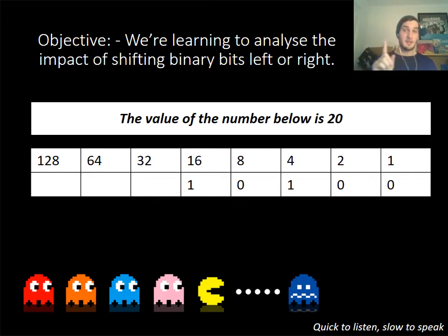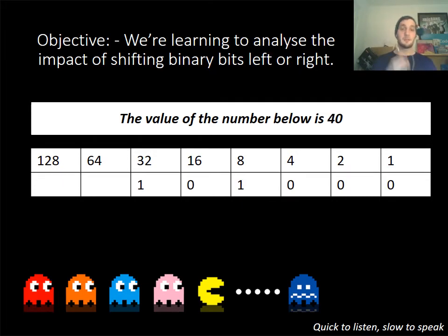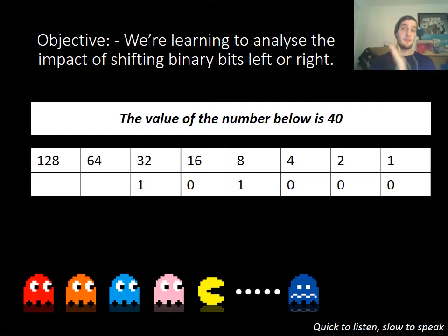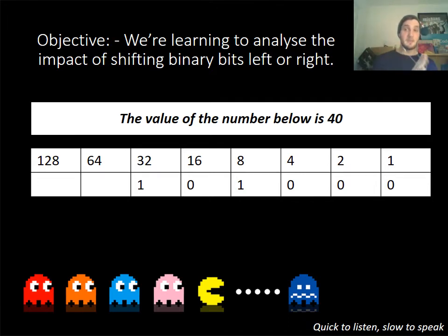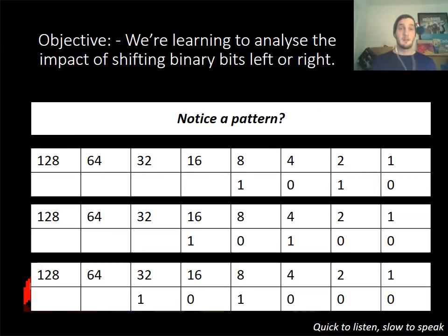If I have to move that left another time, that number will double again, so it becomes 40. So think about the power that is moving that left. Notice if I move numbers to the left — if I have a binary shift to the left — essentially each time I've moved it, I've doubled it. Notice the pattern: as it increases to the left, it doubles.